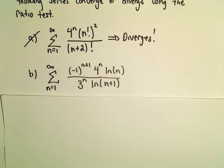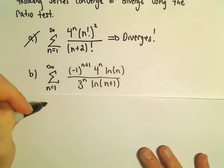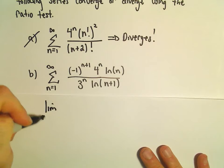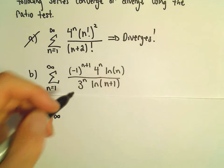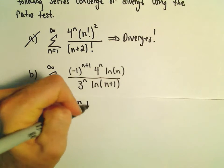So before we even use the ratio test, I'm just going to use the test for divergence. I'm going to look at the limit as n goes to infinity. I'm going to forget about the negative 1 to the n plus 1 part and just look at the rest of it.